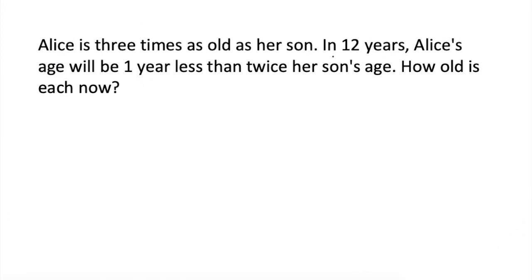Alice is three times as old as her son. In 12 years, Alice's age will be one year less than twice her son's age. How old is each now? So, sa table natin, we will have 12 years or positive 12. And in present age or now,